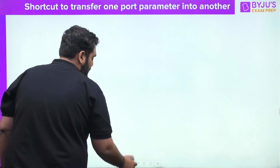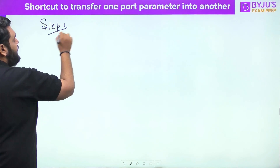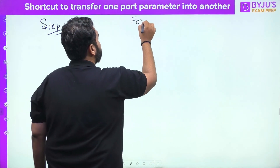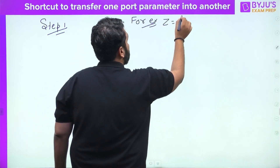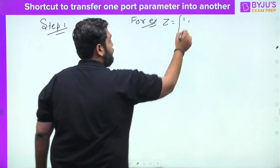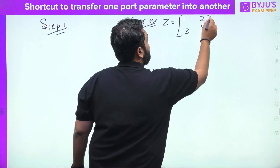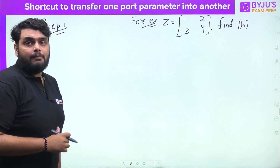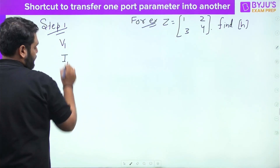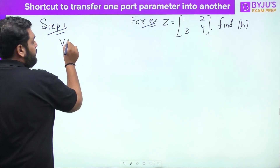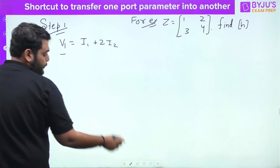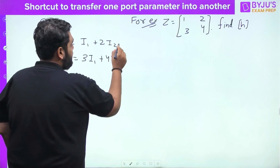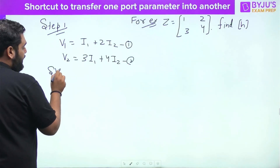There are a few steps. Step one: write the equation of the parameter which is given. For example, suppose the Z parameter given is the matrix [1, 2; 3, 4] and I need to find the H parameter. So for Step 1, I write down the Z parameter in equation form: V1 = I1 + 2·I2 (equation 1), and V2 = 3·I1 + 4·I2 (equation 2).